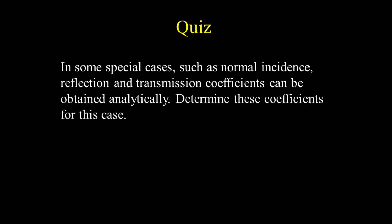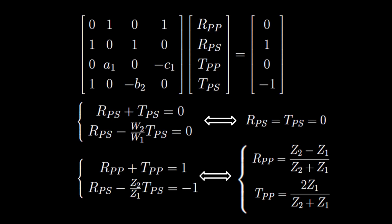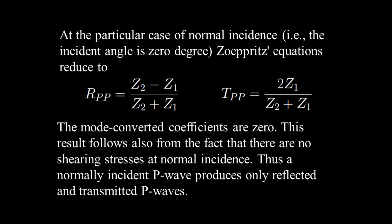Now it's time for a quiz. In some special cases, such as normal incidence in fluid-fluid half spaces, reflection and transmission coefficients can be obtained analytically. For normal incidence — that is, theta incident equals zero — the four Zoeppritz equations reduce to two equations involving RPP and TPP only. Zoeppritz equations reduce to: RPP equals the difference of P wave impedances of the two rock formations divided by the sum, and TPP equals twice the P wave impedance of the top half space divided by the sum of impedances.